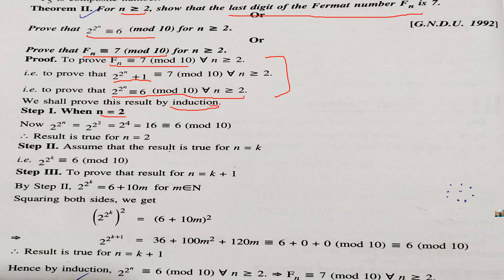First of all, take n is equal to 2 in this equation. Take n is equal to 2 in this equation. So, we get 2 raised to power 2. It is 2 raised to power 4, 16. If we take mod 10, it becomes 6 mod 10. So, it is proved for 6 mod 10.